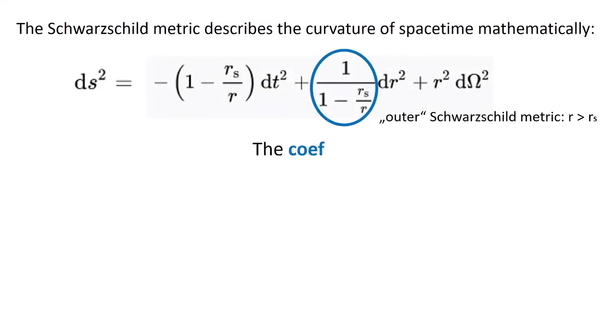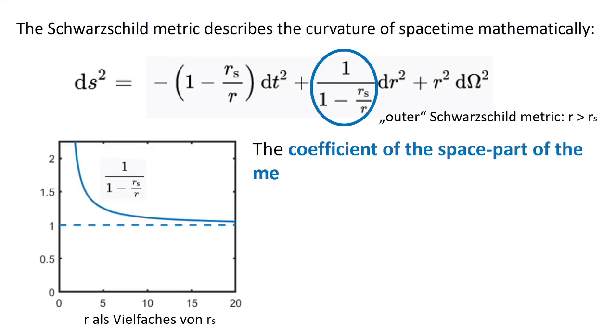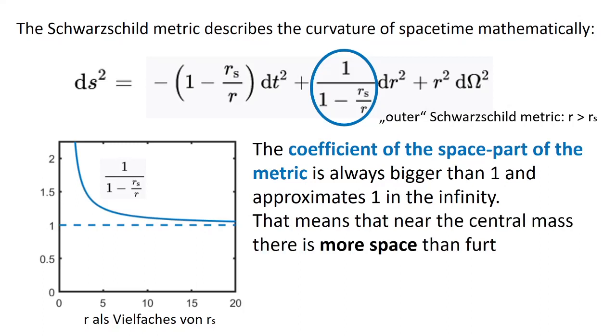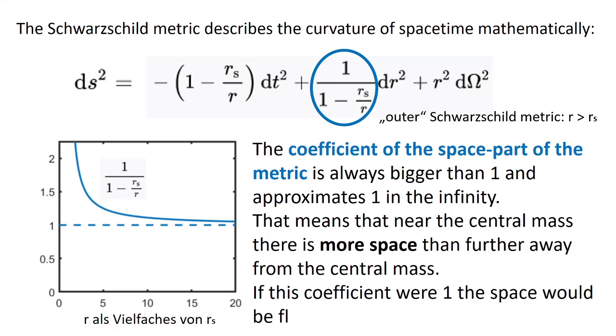The Schwarzschild metric describes the curvature of space-time mathematically. The coefficient of the space part of the metric is always bigger than one and approximates one in the infinity. That means that near the central mass, there is more space than further away from the central mass. If this coefficient were one, the space would be flat.